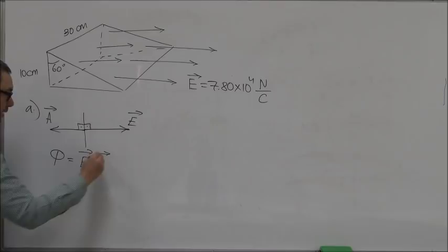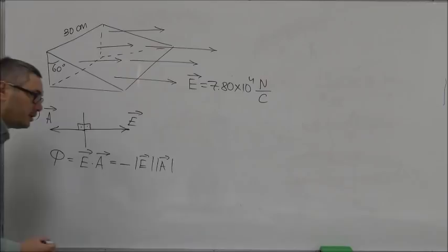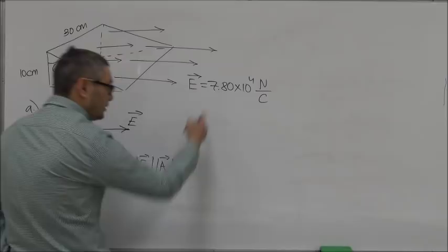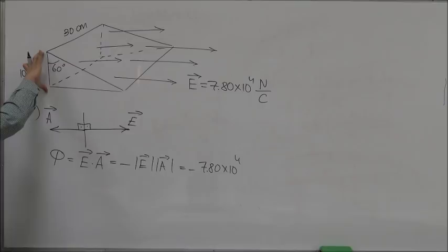Because they're pointing opposite to each other, this equals negative magnitude of E times magnitude of A, because cosine of 180 degrees is minus one. So the magnitude of E is given, that's minus 7.80 times 10 to the 4.